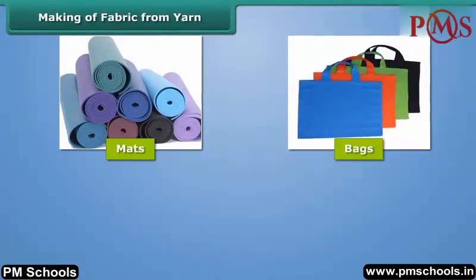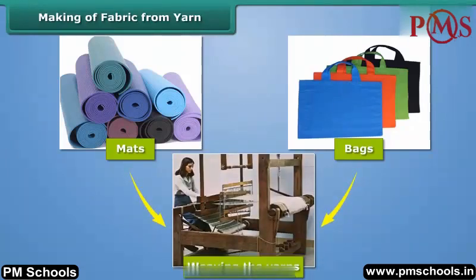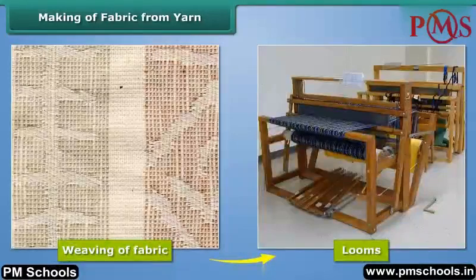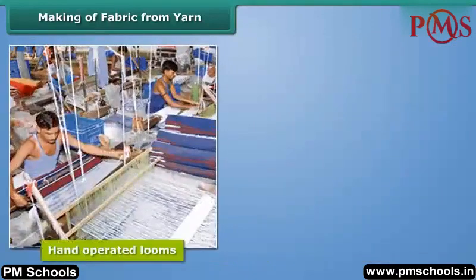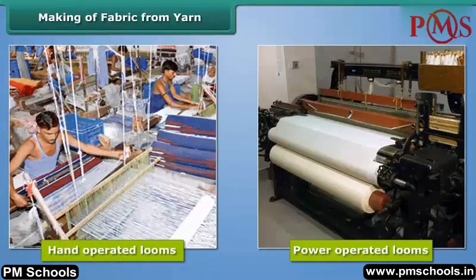Now let us know how fabric is made from yarn. Fabric is made by weaving and knitting the yarns. See these mats or these bags — these are made by weaving the yarns. Weaving of fabric is done on looms. Looms are of two types: hand-operated looms and power-operated looms. You can also make a mat with a few thin ropes. Take a few ropes of yellow and blue color and weave the yellow and blue strips one by one. Similarly, two sets of yarn are woven to make a fabric.